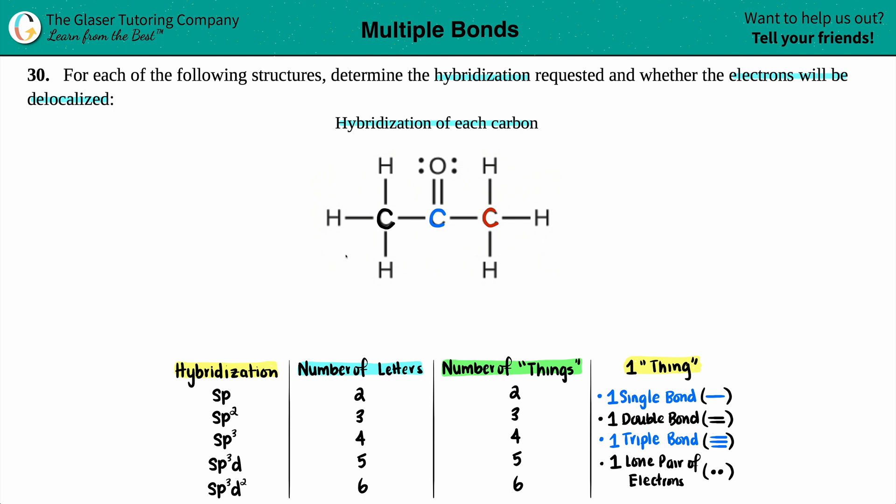Now we're going to focus on this carbon. I don't care about what's going on with these carbons. What's going on around that carbon? I have one single bond, that's one thing. Another single bond, that's two things. Another single bond bound to that carbon and one more single bond. For this carbon, there's four things, which means four letters, four things, four letters. That's SP3. So there's the hybridization of that carbon.